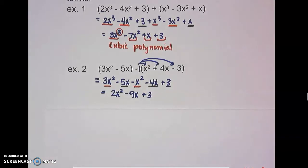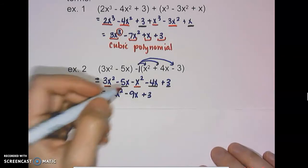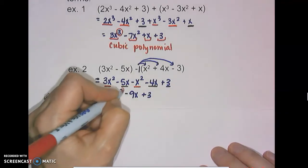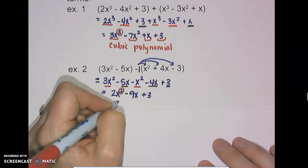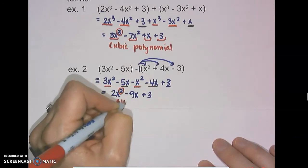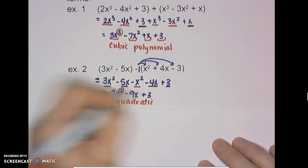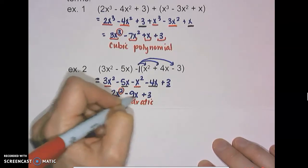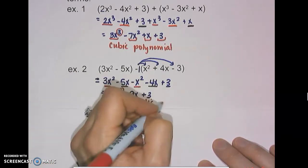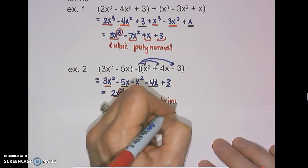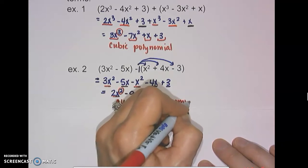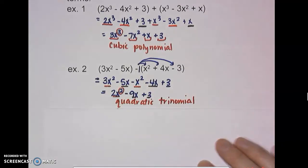Now we name this result. We always name based on degree first — that's the highest exponent. Here it's 2, which means this is quadratic. And there are 3 terms, so this is a quadratic trinomial.